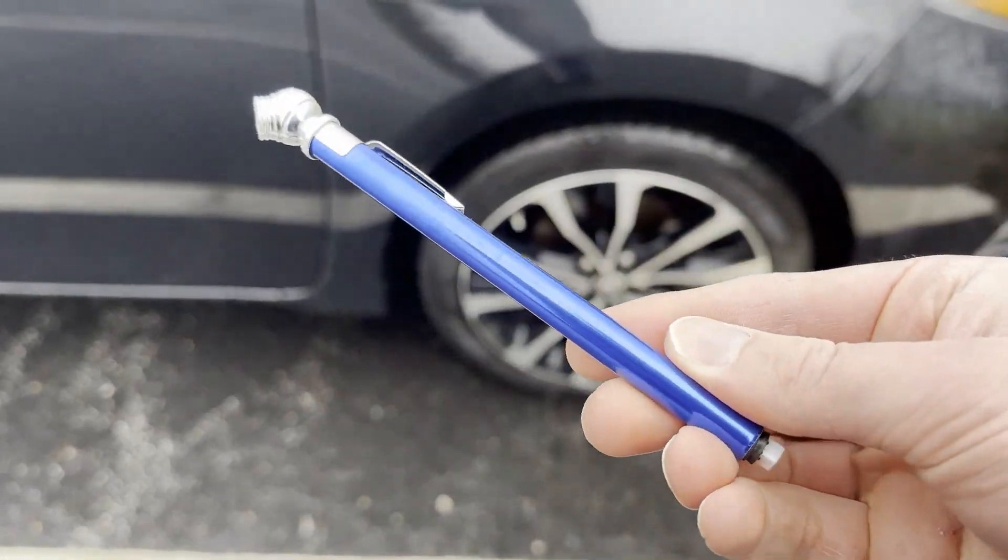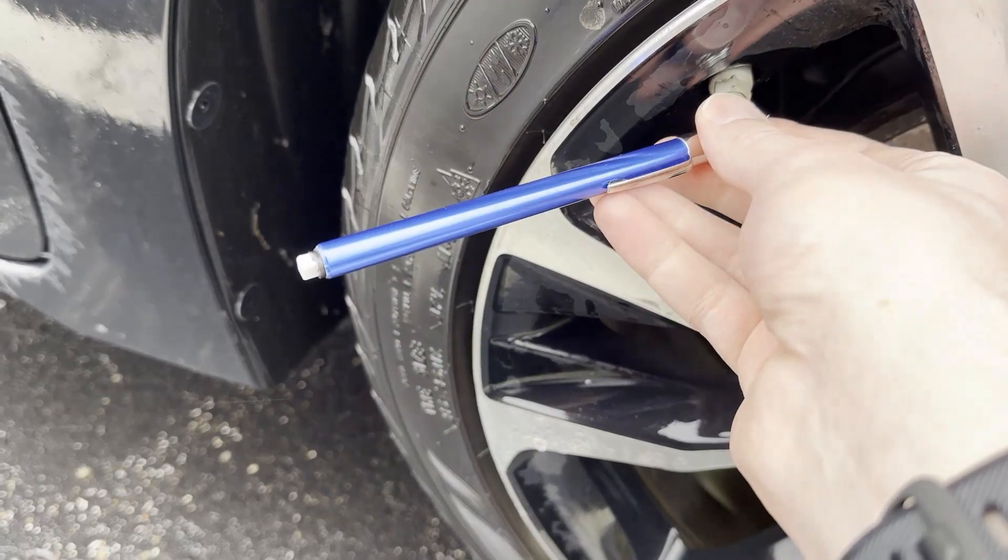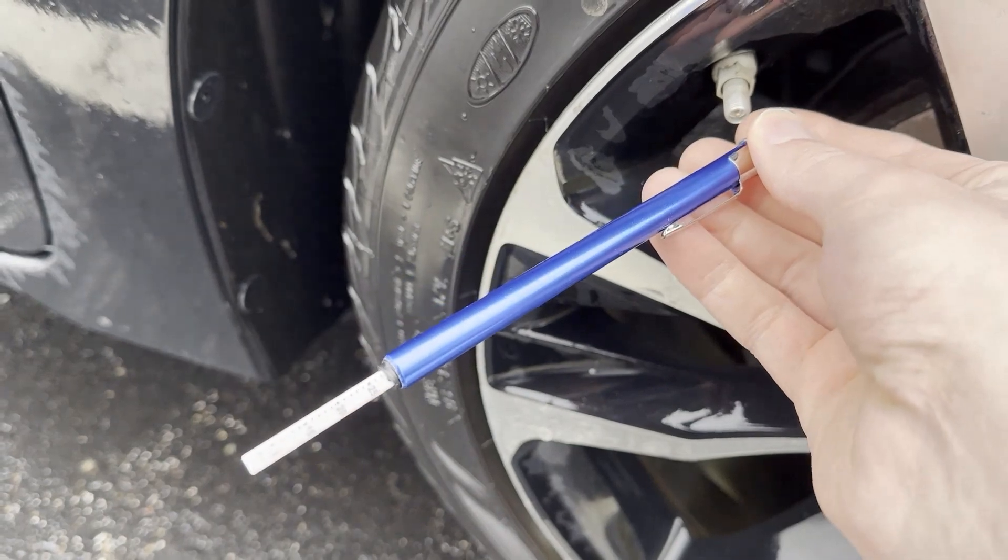This is a pencil pressure gauge. You can use it to check your car's tire pressure. They're pretty handy, and they're cheap as dirt. I got this one for free sitting next to stress balls and pens at a trade show. And that's where the problem lies.